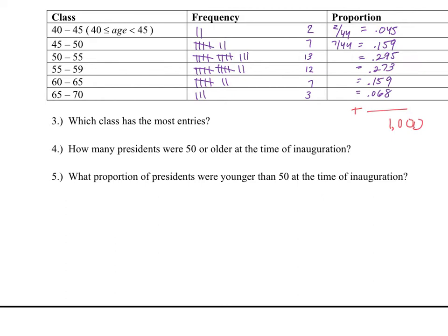In terms of which class has the most entries, we can see ages 50 to 55 has the most. How many presidents were 50 or older at inauguration? Add up all these numbers: 13, 12, 7, and 3, giving us 35 presidents.